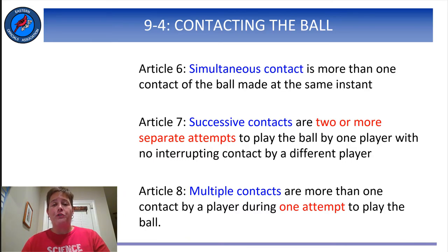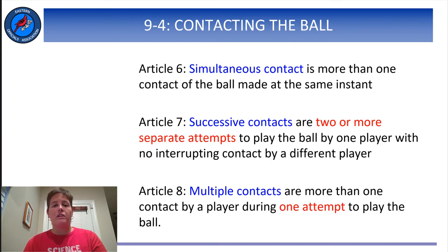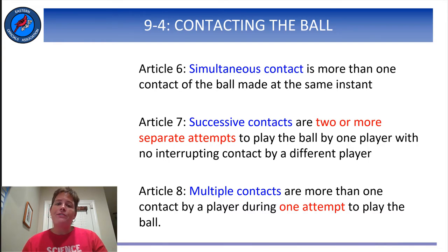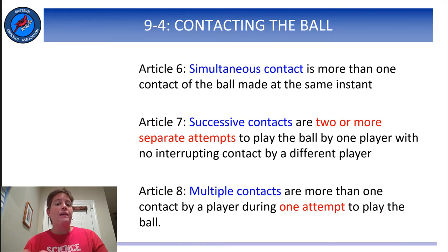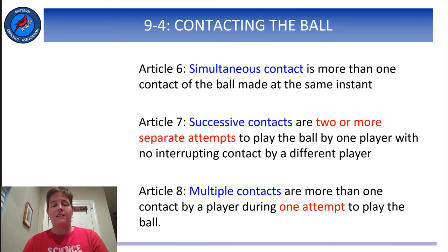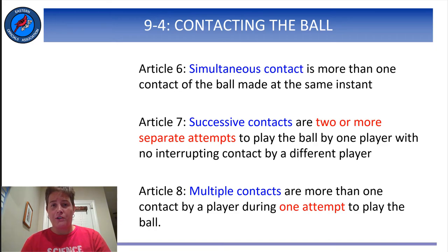That's the end of Rule 9-4. This one is a toughie — on top of all the terminology introduced in this rule, the fact that it's so subjective means you're really going to understand it more as you gain experience. Be sure you get out there and watch as much volleyball as you can, and talk to people about it. Talk to your mentors. Ask them their opinions about whether something is a multiple contact or an illegal contact. As you see more and more examples, you'll begin to internalize those rules for yourself.